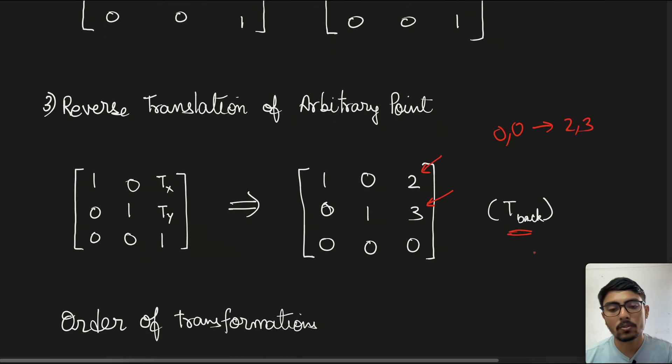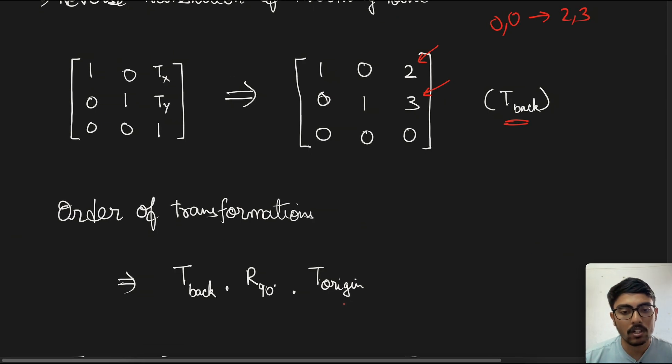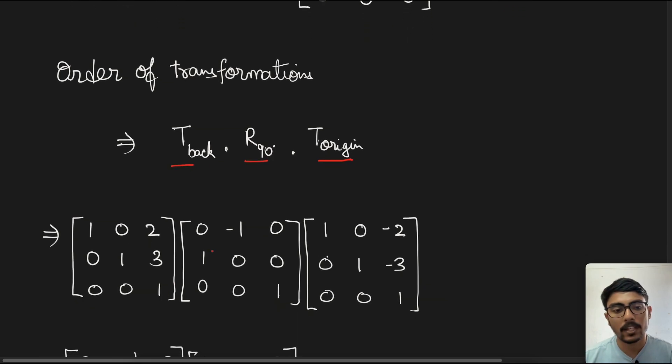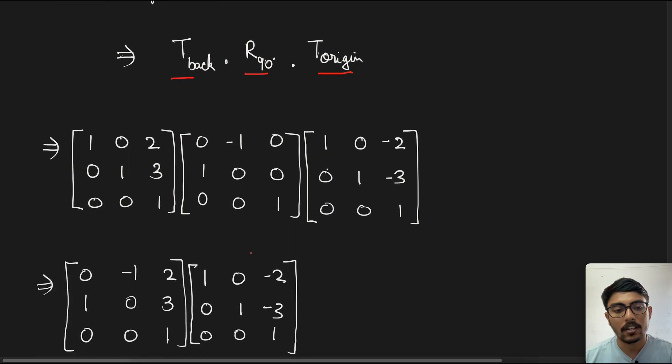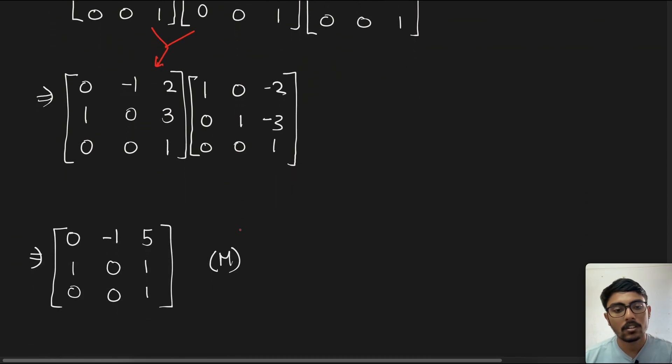Now what we want to find out is the order of transformations. First, what we want is to multiply T_origin because it will shift it from the existing point to the origin. Next R_90, and then T_back. We will simply multiply these three, and we get this particular matrix. When we multiply these two and then again multiply, we get M.